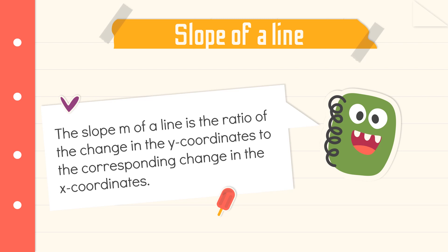As you would notice, slope is represented by the letter m. In physics or science, distance is represented by d, speed by s, velocity by v. This time, slope is letter m. Why not letter s? Maybe speed would be confused with slope. That's why we use m. According to some references, we use m for slope since the French word for going up is monter. So that is the reason why we have m for slope.